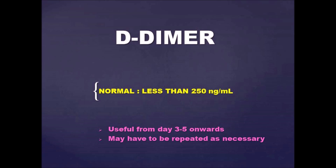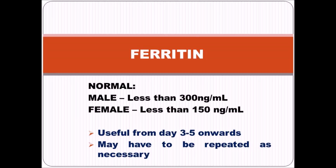The next test is the D-dimer. In COVID infection, cytokines in the blood are overproduced, leading to internal inflammation. As a result, there can be microscopic internal bleeding and unwanted clots. While these clots are being degraded, a product called D-dimer is released. By repeatedly checking the D-dimer level, the level of inflammation or infection can be monitored.